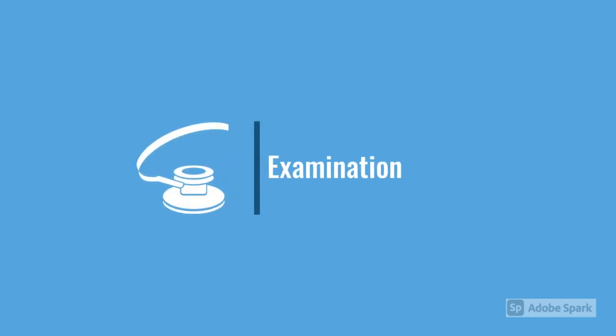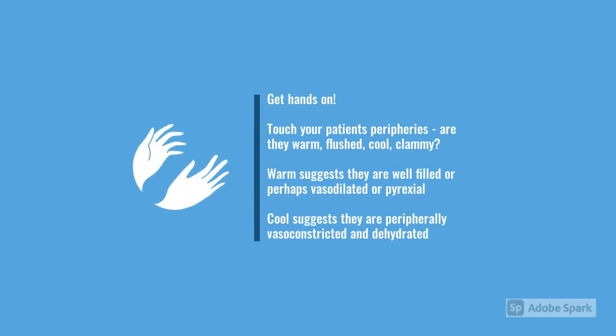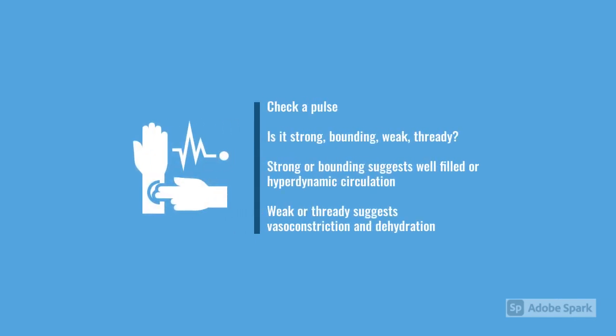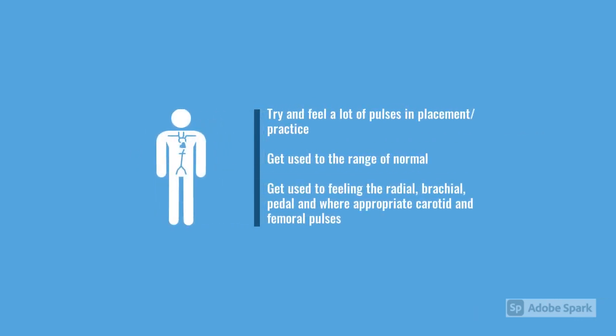Moving on to clinical assessment — it's really important to get hands on. Feel their hands: do they feel warm, are they flushed, suggesting they might be a bit over-fluidated? Or are they very cold and clammy, which might suggest they're hypovolaemic? Check the pulse at the same time — does it feel like a good character radial pulse? Is it particularly weak or very quick, which might suggest tachycardia from hypovolaemia? There's so much information you can get from feeling a pulse that you lose if you only rely on the automatic blood pressure machine.